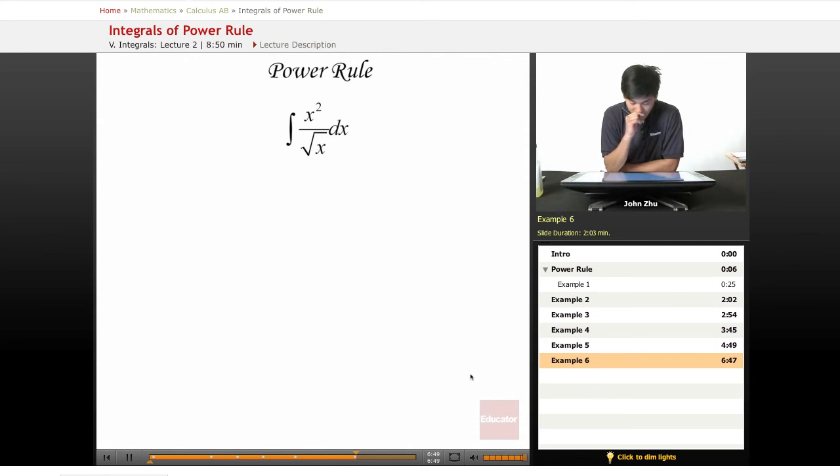For example here, once again, we have an x squared over a square root of x term. Now, right away that looks problematic because we can't really take the power rule of this expression.